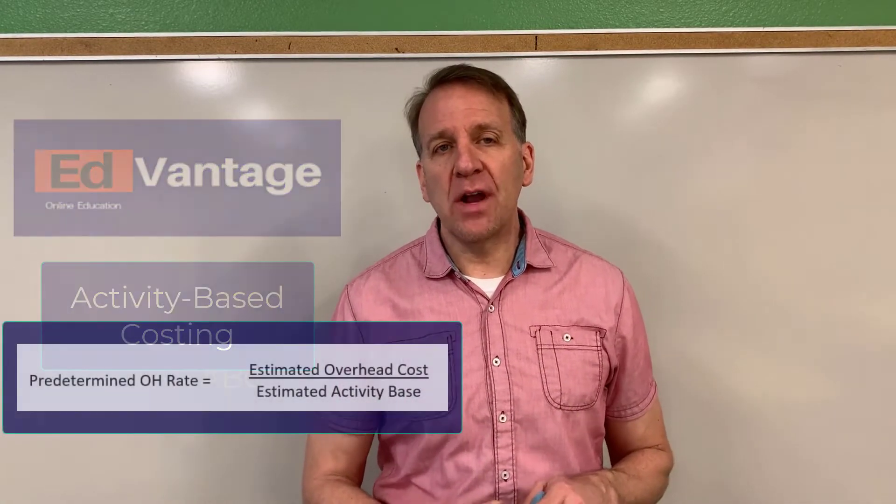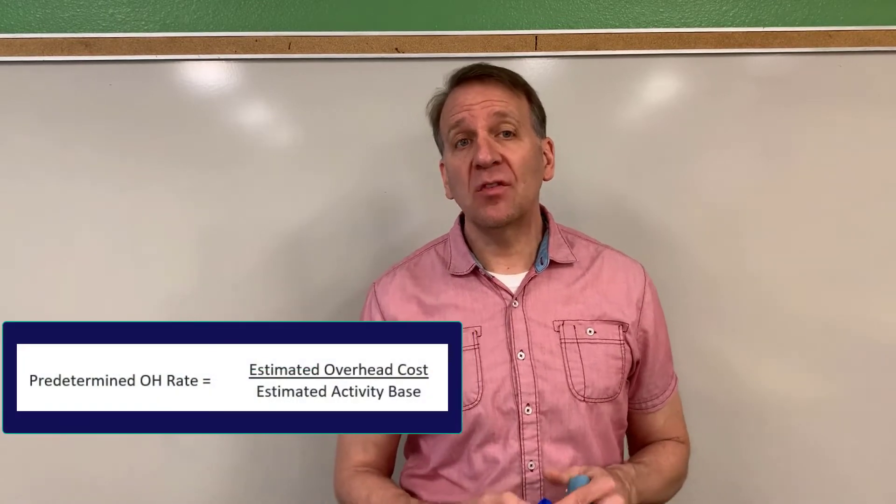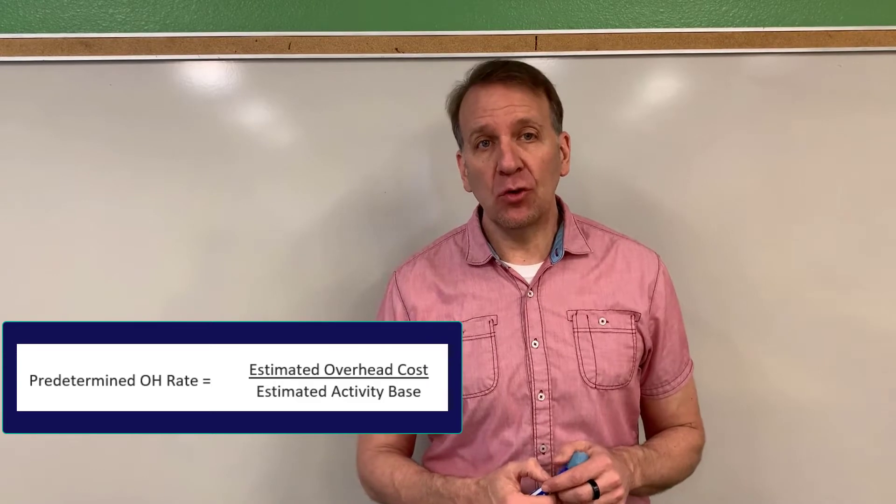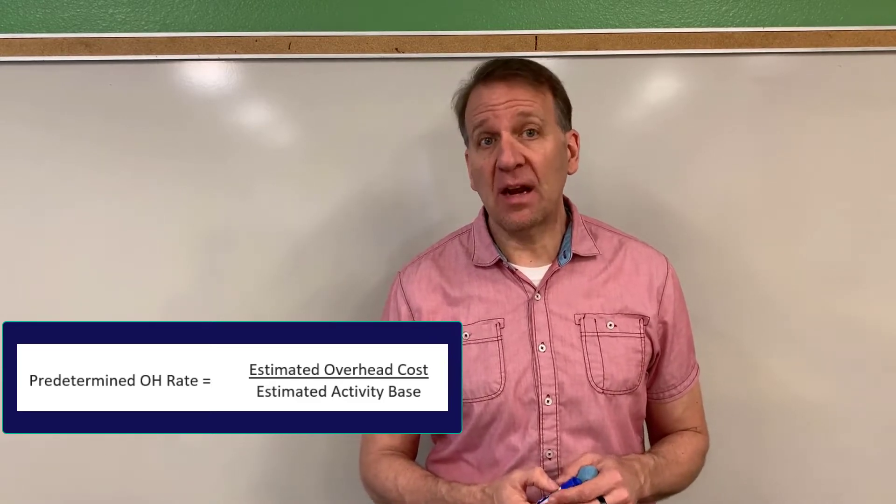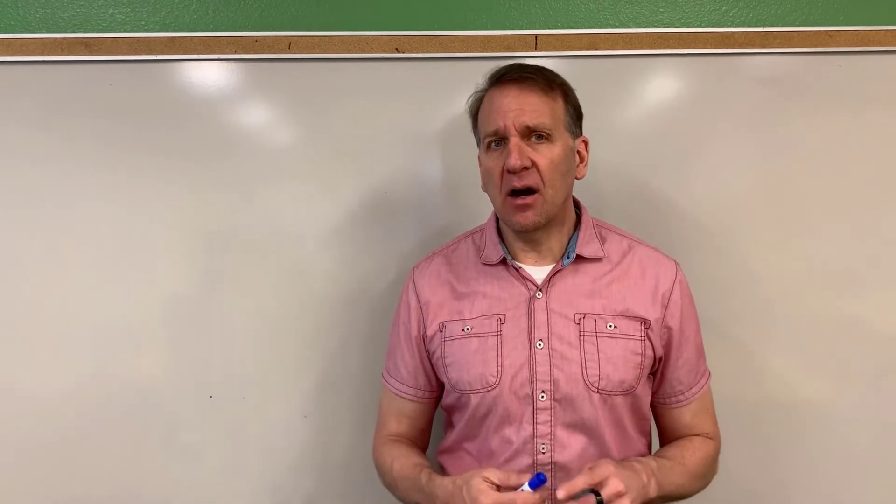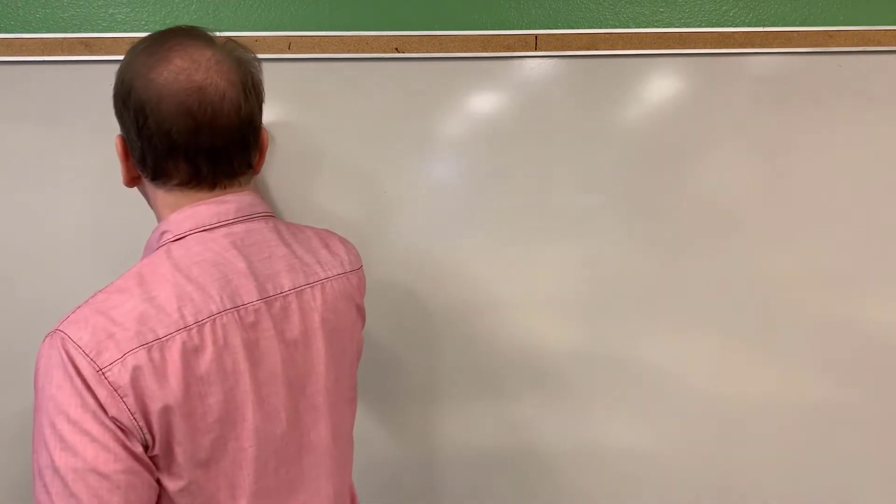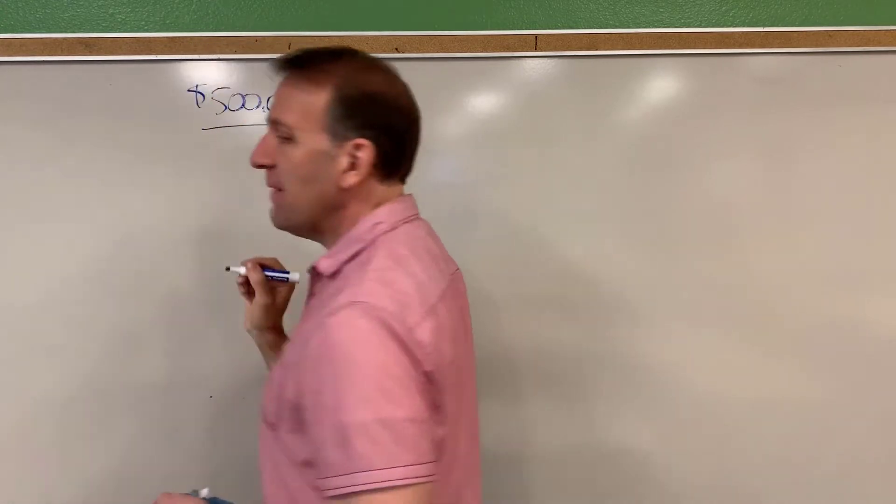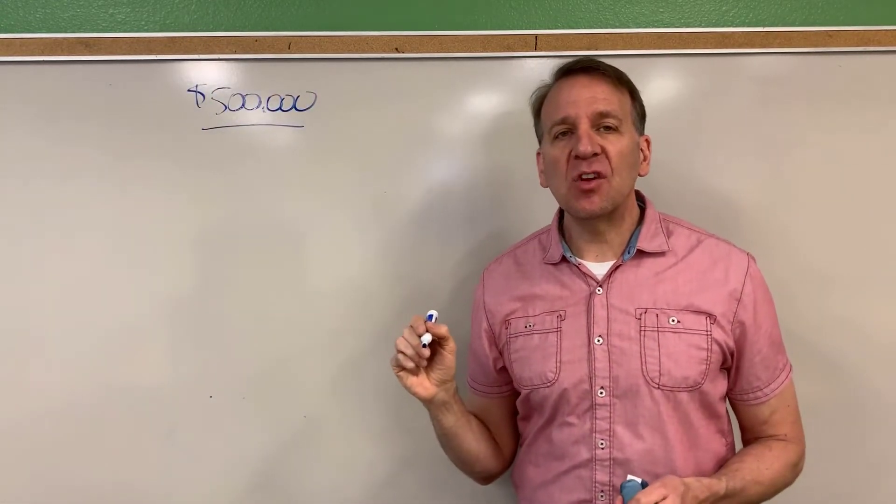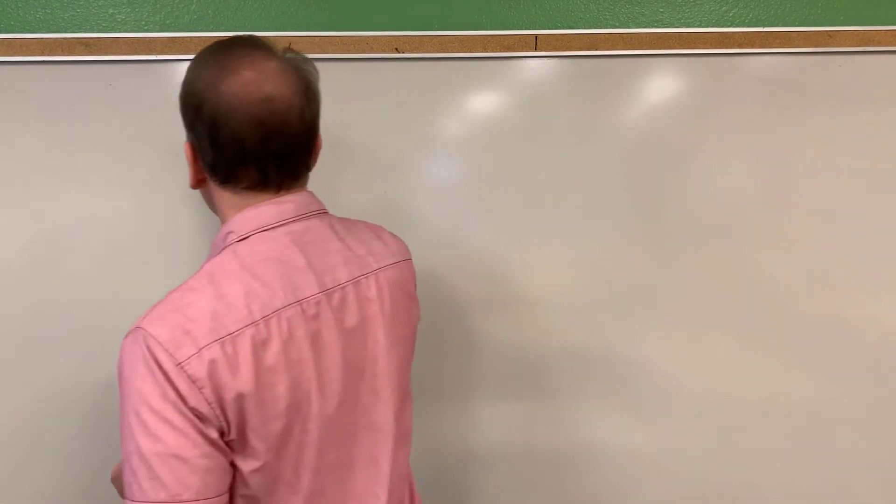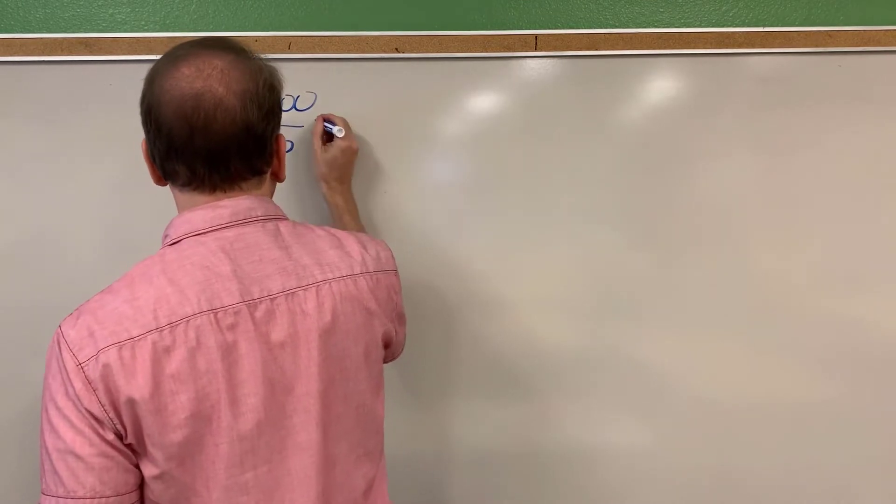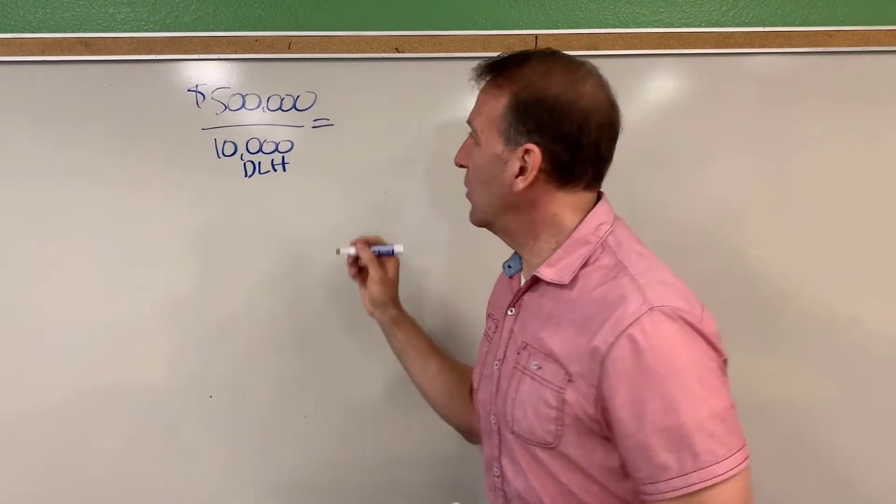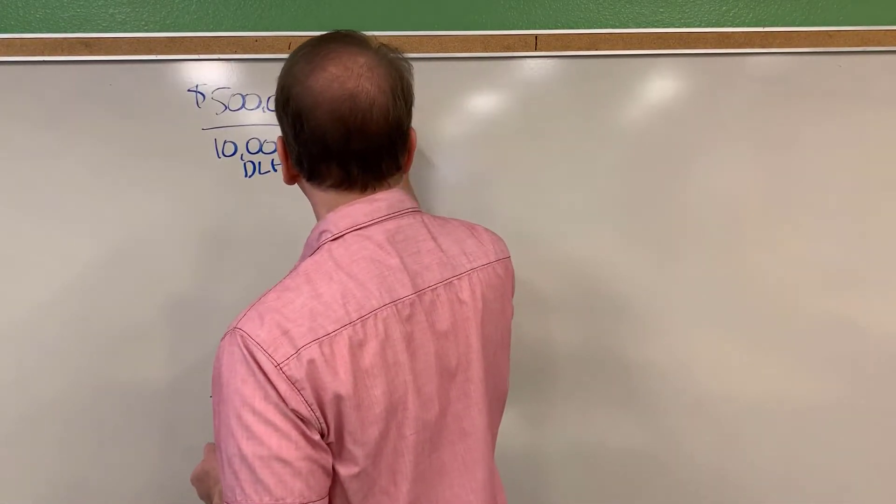Remember, the predetermined overhead rate was when we calculated one single rate to be used to allocate overhead into work in process. This is at a manufacturing plant. In our example, we had estimated overhead of $500,000 and we divided that by an estimated activity base or allocation amount of 10,000 direct labor hours. So that got us a rate of $50.